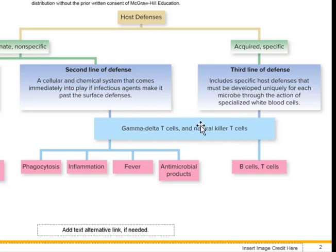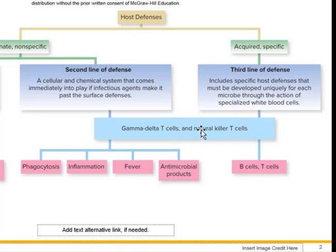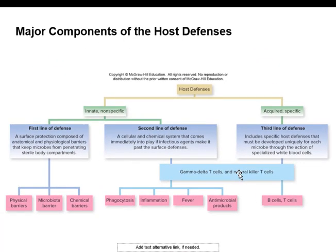Natural killer T and gamma delta T cells respond non-specifically even though they are lymphocytes — they are the black sheep of the family. They don't work the same as B cells and T cells, but they are of lymphocyte lineage, and so they are part of the third line of defense and acquired specific immunity.